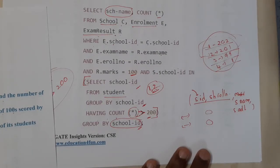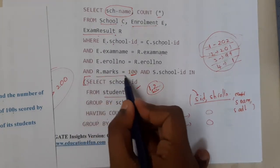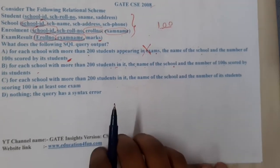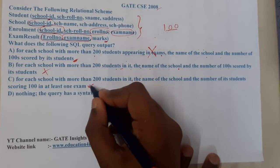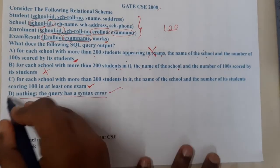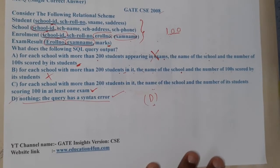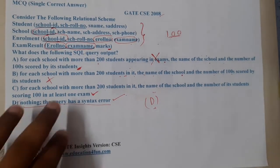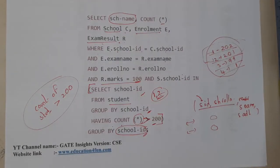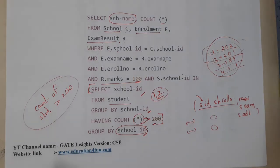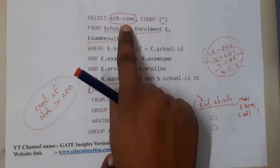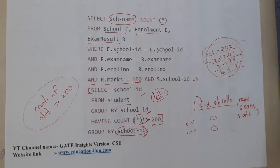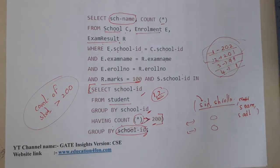If there are multiple exams, option C might seem appropriate, but because there is a specific error in the code — selecting school name while grouping by school ID — option D is the correct answer. To clarify: if the query had written school name in GROUP BY, or school ID in SELECT consistently, then option C would have been correct.